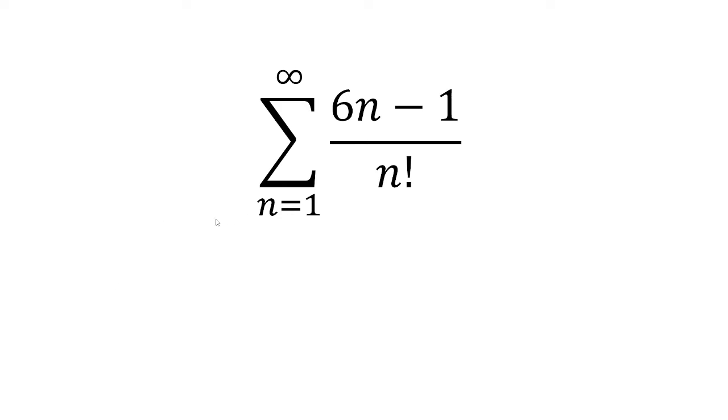In this video, we want to find whether the sum from n equals 1 to infinity of 6n minus 1 over n factorial converges or diverges.